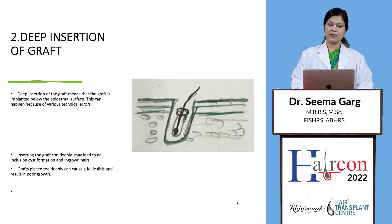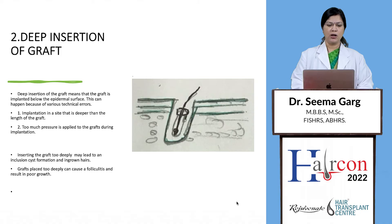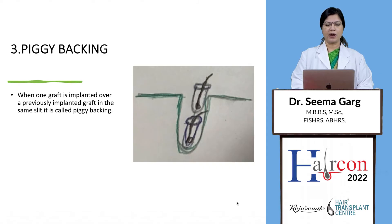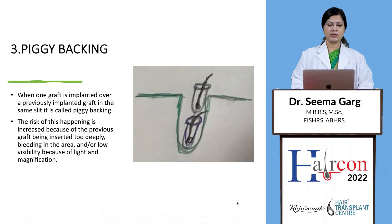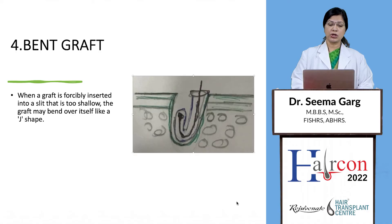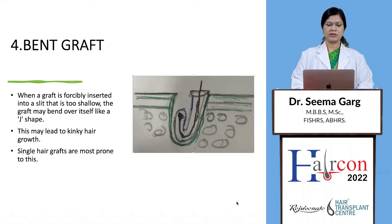Deep insertion means the graft is implanted below the epidermal surface. This can happen due to implantation in a site deeper than the length of the graft, too much pressure applied during implantation, or too much pressure when placing gauze over the implanted graft to control oozing. Inserting the graft too deeply may cause inclusion cysts, ingrown hair, folliculitis, and poor growth. Piggybacking occurs when one graft is implanted over a previously implanted graft in the same slit; its risk is increased by the previous graft being inserted too deeply, bleeding in the area, or low visibility due to poor light and magnification. When a graft is forcibly inserted into a slit that is too shallow, the graft may bend over itself and become j-shaped, which may lead to kinky hair growth — single hair grafts are more prone to this.